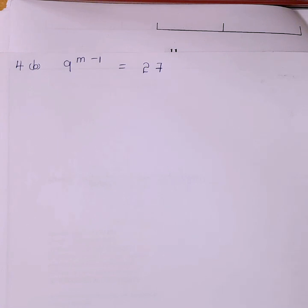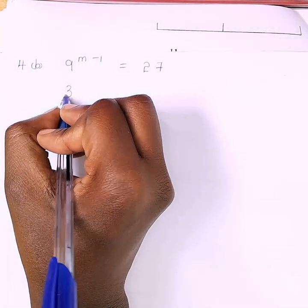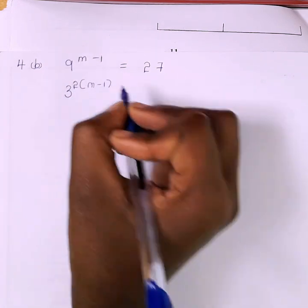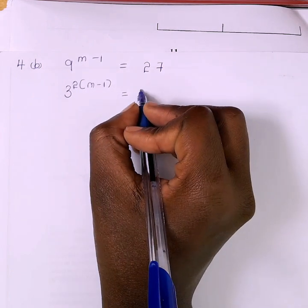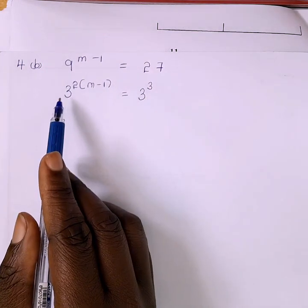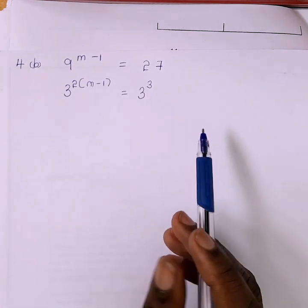When we say the bases, we mean this 9 and this 27. We want them to have the same figure on their base. If we raise 3 to the power of 2, we get 9. If we raise 3 to the power of 3, we get 27. So we rewrite 9 as 3 to the power of 2, with exponent (m minus 1), and 27 as 3 to the power of 3. Now that our bases are the same — 3 on both sides — we can equate the powers.